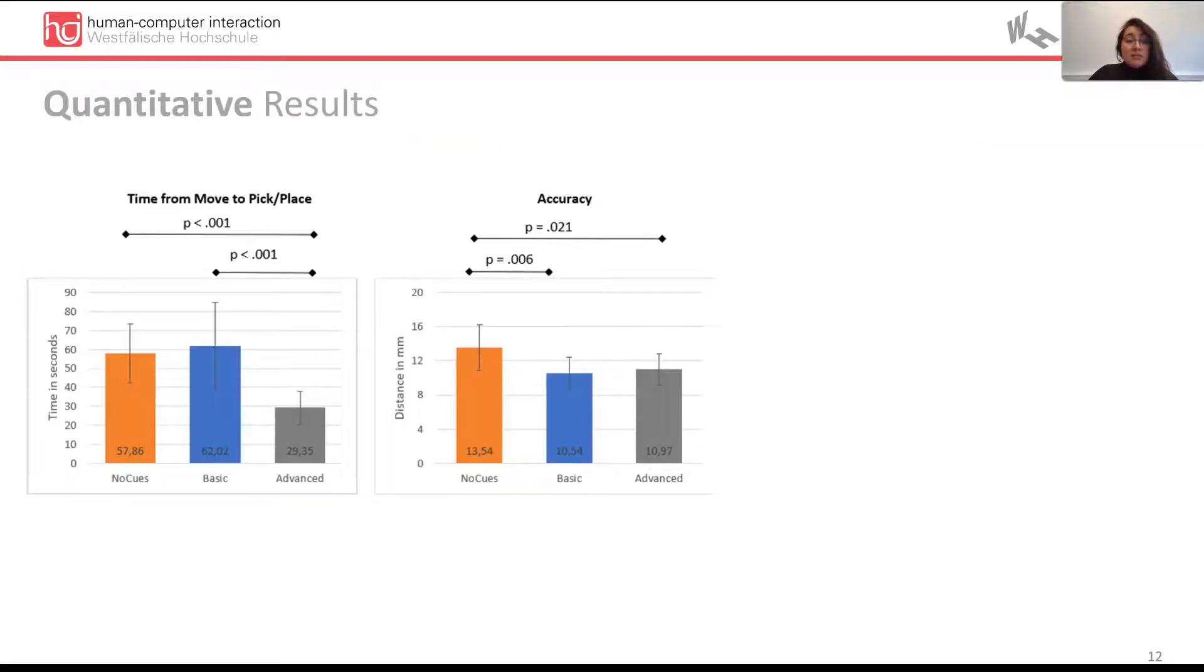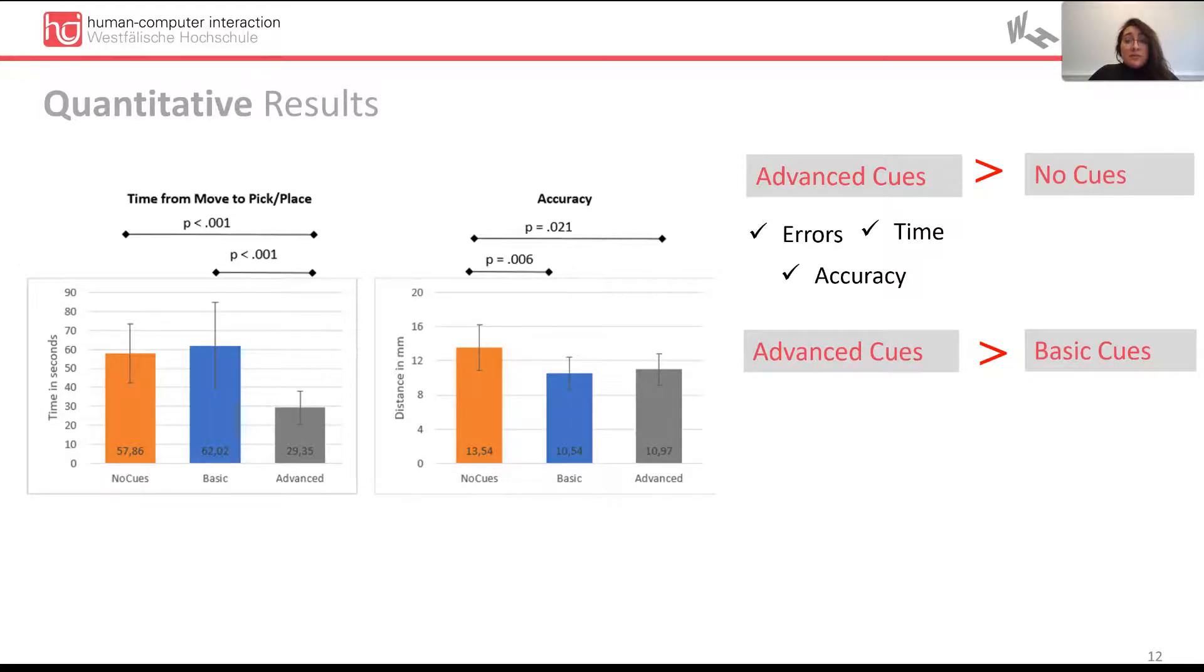Our quantitative results show that the advanced cues led to less errors, shorter time, and higher accuracy compared to the no cues condition. The advanced cues compared to the basic cues resulted in less errors and a shorter time. The basic cues compared to the no cues led to higher accuracy.